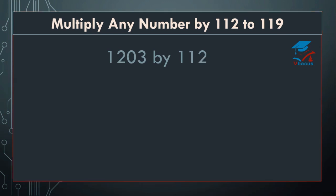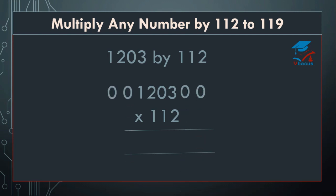Let us go to the next sum: multiply any number by 112 to 119. As we learnt for multiplication of any number by 111, we were inserting 2 zeros on the right hand side and 2 zeros on the left hand side. Here you have to multiply by 2 and add 3 digits at a time. So, 2 threes are 6 plus 0 plus 0 equals 6. Write 6.